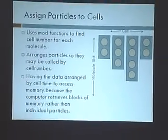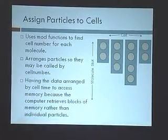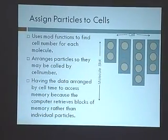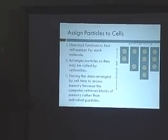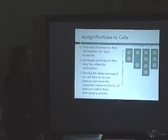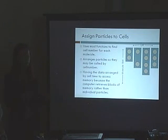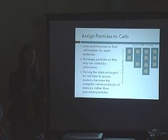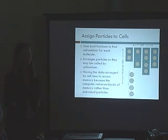The way we have our data structure set up is we have an array of cells, and each cell has space for certain molecules in it. If a molecule wants to move into a cell that doesn't have room for it, the cell will expand. This way, we conserve memory for cells that won't have as many molecules — say, those inside the object. When we assign particles to cells, we use modular functions to assign them to the proper cell, and group them accordingly. We want our data to be physically grouped by cell because when calculating, we use data from molecules within the same cell. If we had to randomly find where those particles are stored in memory, it would take much longer.